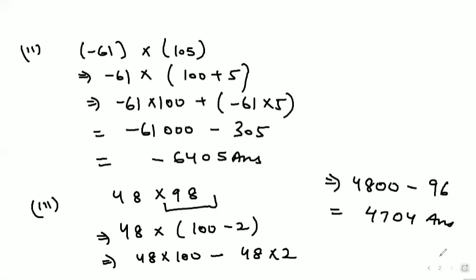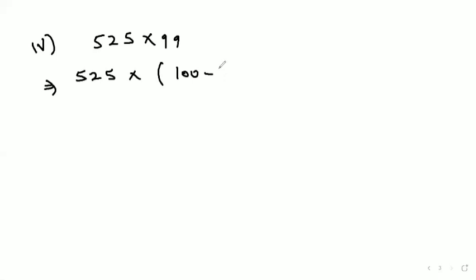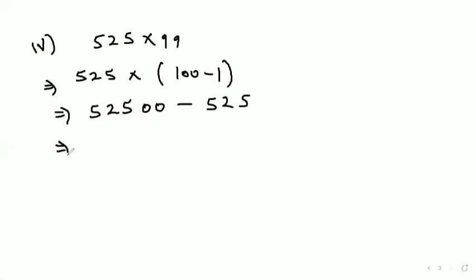Now come to the fourth part of question number 2: 525 into 99. We split 99 and write it as 100 minus 1. So 525 into 100 equals 52,500, minus 525. That gives 51,975. This is our answer for the fourth part.